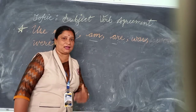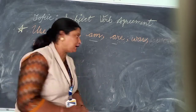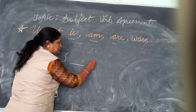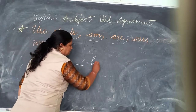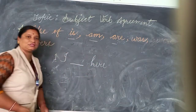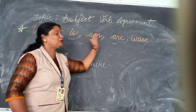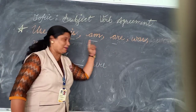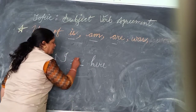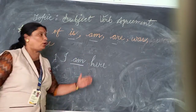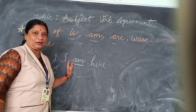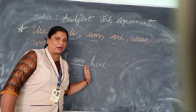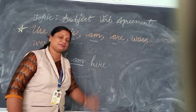For example: I am here. So here I will write: I ___ here. What will I use — is, am, or are? The answer is am, because I am. Am is used with only and only I. We always use am with I. So remember this always.